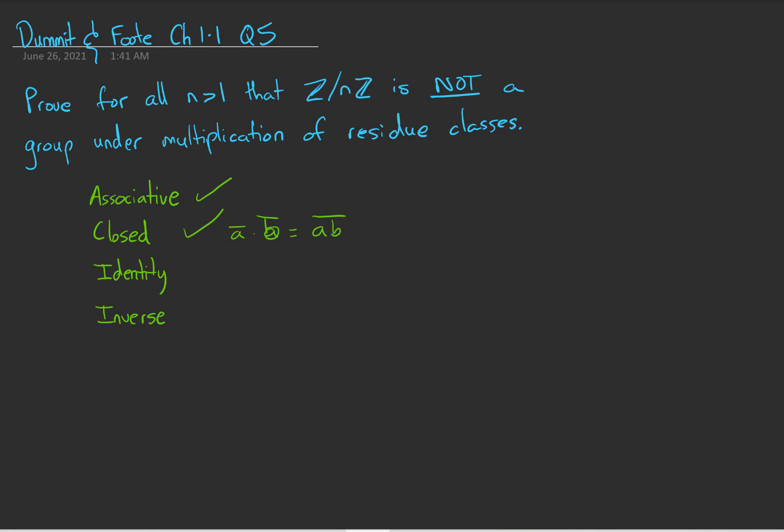What about the identity? We have that as well, because congruence class of 1 times any other congruence class is the same thing as congruence class of 1 times A, which equals the congruence class of A.